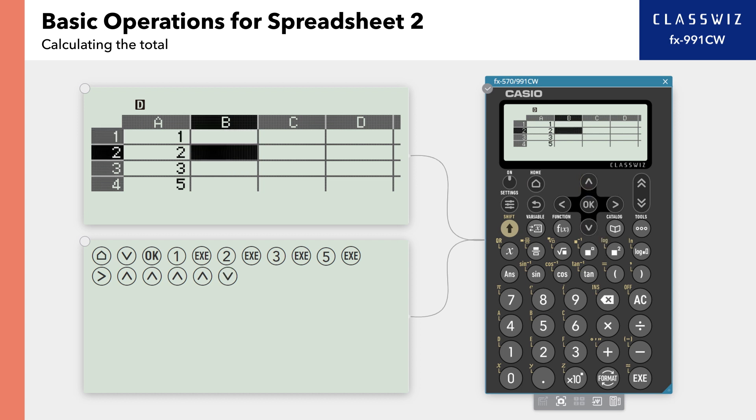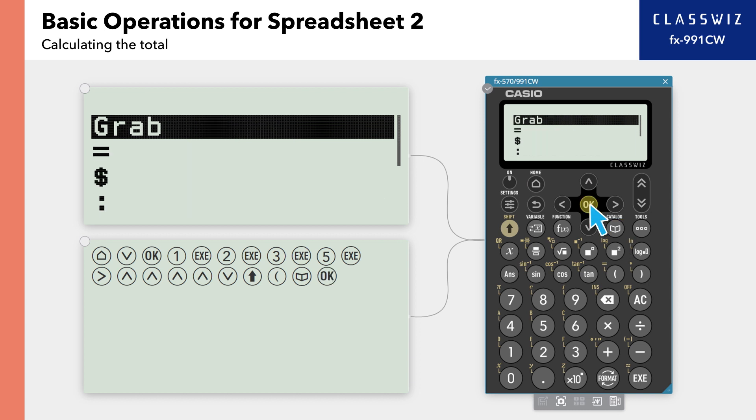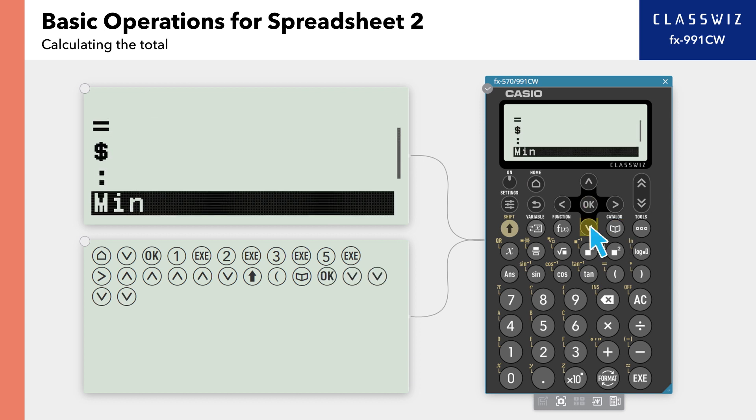Press Shift and opening parenthesis, then equals. Press Catalog, then select Spreadsheet. Scroll down to the bottom and select Sum.